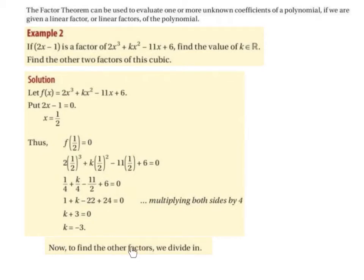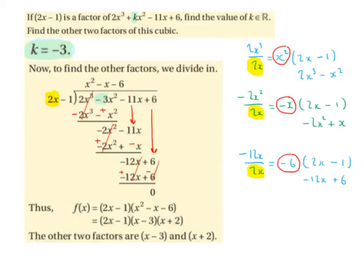Now to find the other factors we're going to divide in. We got k is equal to minus 3, so we're going to rewrite our equation and swap k for minus 3. So instead of 2x cubed plus kx squared minus 11x plus 6, we now have 2x cubed minus 3x squared minus 11x plus 6.